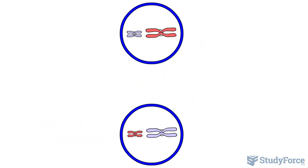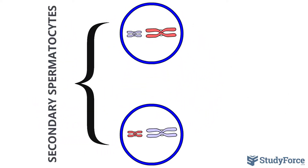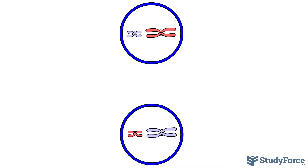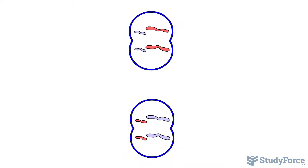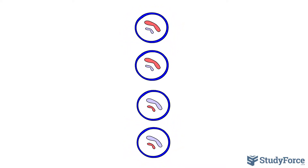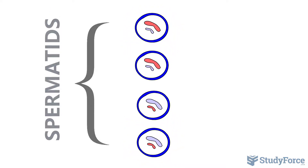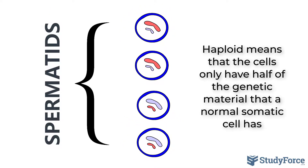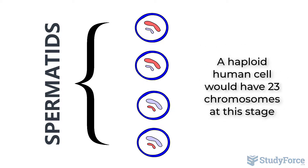After the first meiotic division, two secondary spermatocytes are produced. The secondary spermatocytes divide again in the second stage of meiosis, resulting in four haploid spermatids. See how the cells all have two chromosomes, while the spermatogonium at the beginning had four.